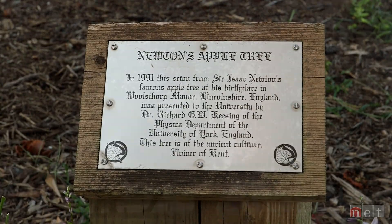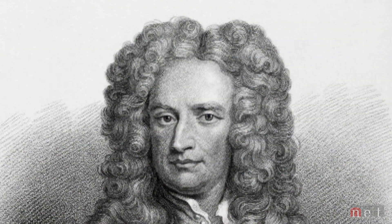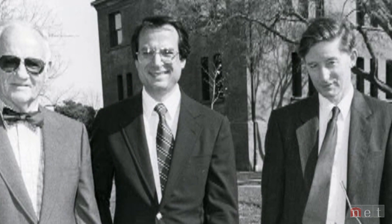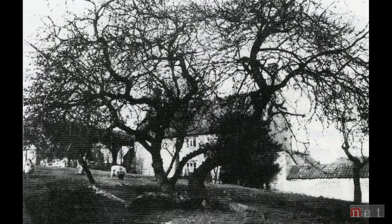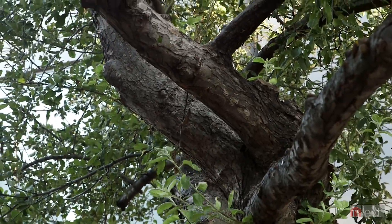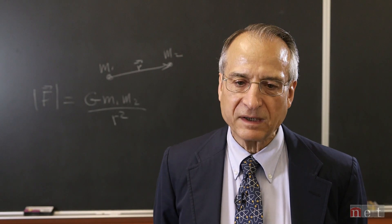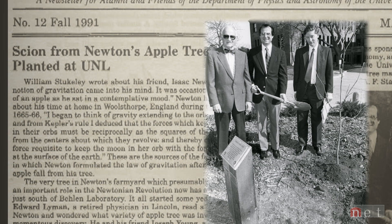So the story of how the tree got to Lincoln: Ed Lyman, a retired physician here in Lincoln, read a biography of Newton. He consulted Joseph Young, a retired horticulture professor at UNL, and the two of them went to England. They met up with Richard Keesing, a professor of physics at York University, who had done a lot of research into the veracity of the story that the apple tree existed. Joseph Young brought a cutting back to Lincoln. They brought it to East Campus and grafted the scion onto a Nebraska rootstock tree, or a tree that could survive Nebraska winters. And then when the tree got large enough, they transplanted it in 1991.